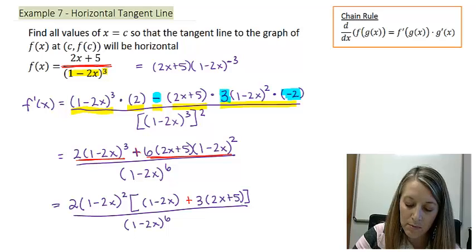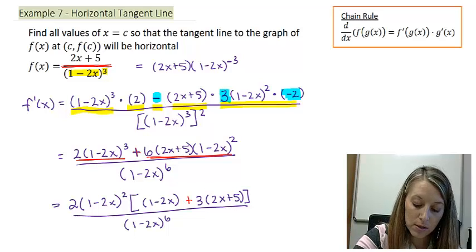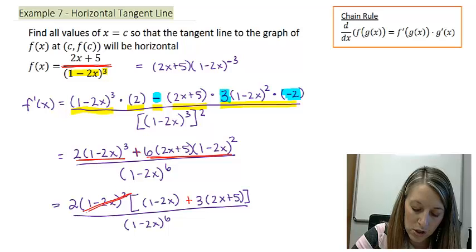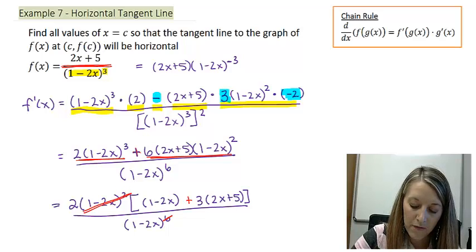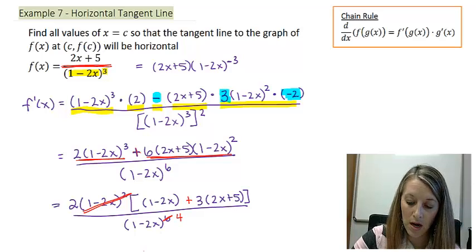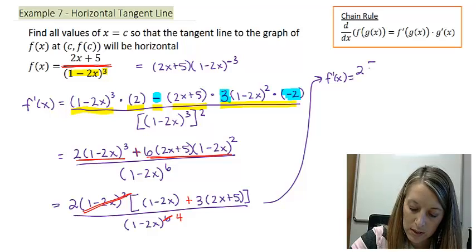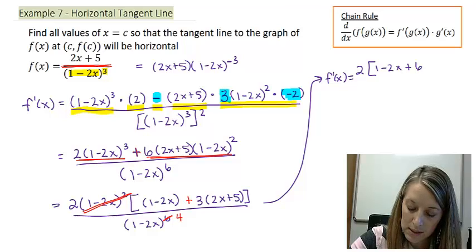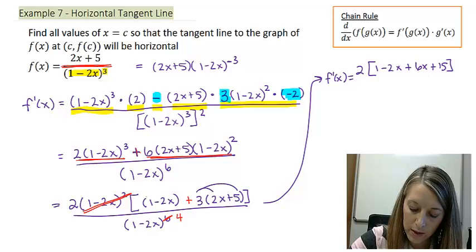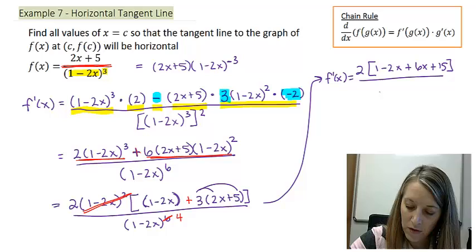So I am going to have to simplify what is in my brackets here. But also to simplify, I can cancel out these (1 - 2x)'s. I have two of them on the top. And if I take that away from the 6 on the bottom, that leaves me with 4 in the denominator. So currently, that gives me 2 times (1 - 2x + 6x + 15), just distributing this 3 through and just dropping these parentheses here, over my (1 - 2x) to the fourth.